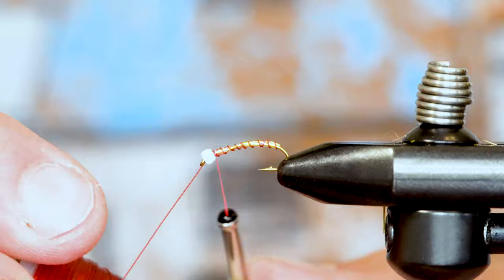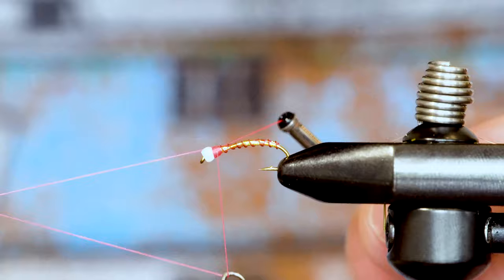Once you've trapped down the wire and trimmed it free, add a nice thick hot spot of the pink thread, and then whip finish to complete the fly.